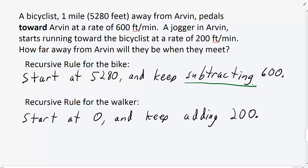For the biker, we're subtracting 600 feet because the biker is getting closer to Arvin, so their distance from Arvin is getting smaller. For the walker, we're adding 200 because their distance from Arvin is getting bigger.